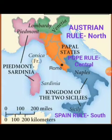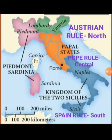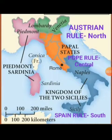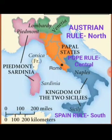Looking at the map: in the northern part of Italy there was an Austrian ruler, in the central part there was a Pope ruler, and in the southern part there was a Spanish ruler. In Piedmont-Sardinia, there was an Italian ruler, and the main motive of the Italian people there was to unify Italy.